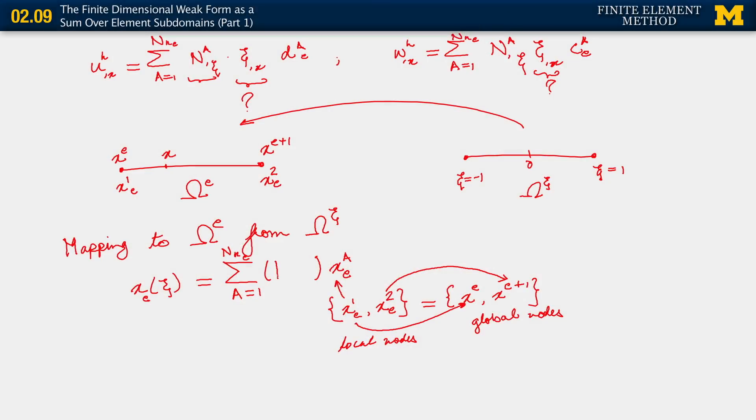Yeah, it is to choose the same basis functions as we chose to interpret, to represent our finite dimensional functions. So, we just use N_a, a being one and two, corresponding to, in fact, the same linear Lagrange polynomials that we already know. So, what we are doing here using the same basis functions as for representing u_h and w_h.